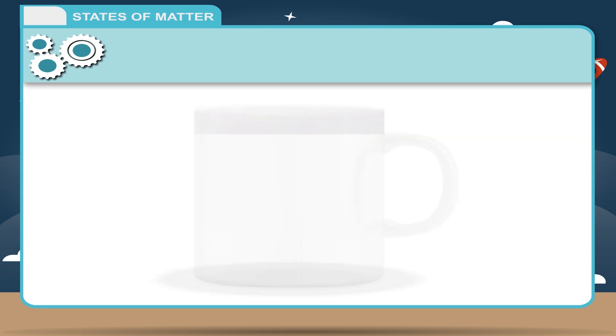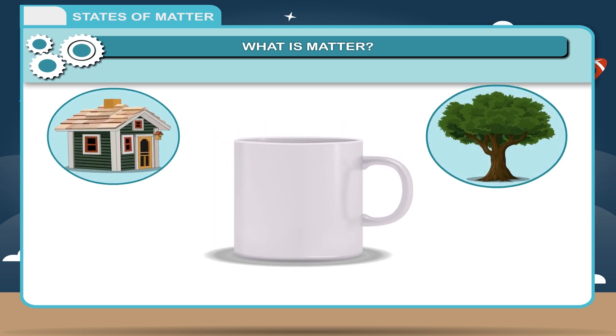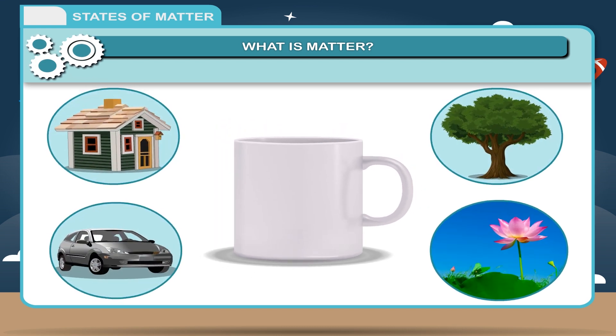What is matter? Matter is defined as anything that has mass and occupies space. Everything around us is made up of matter. It is made up of atoms.